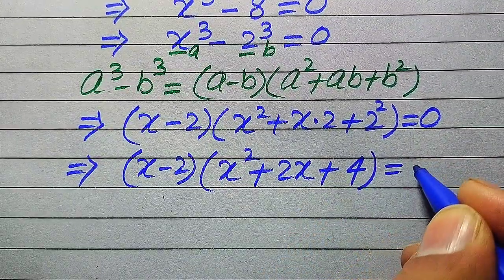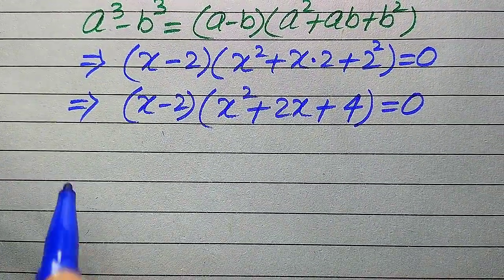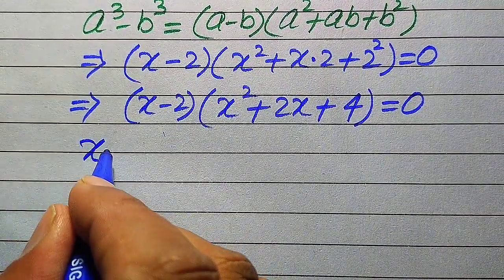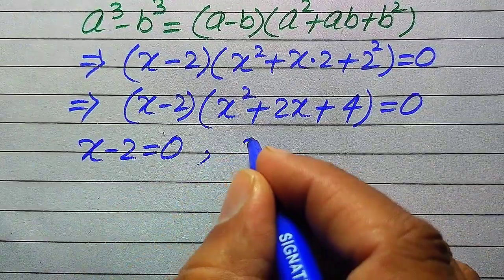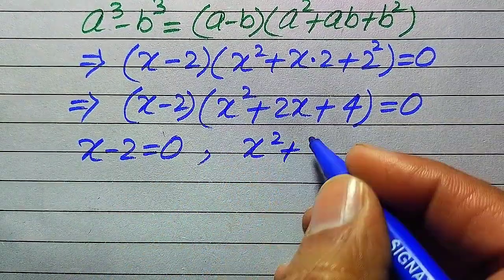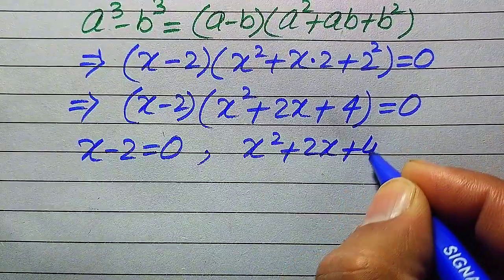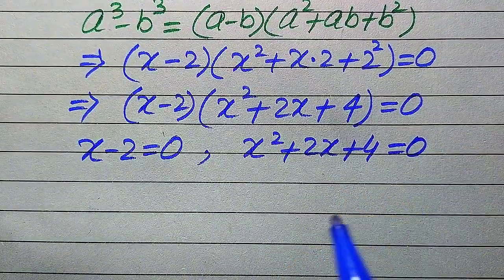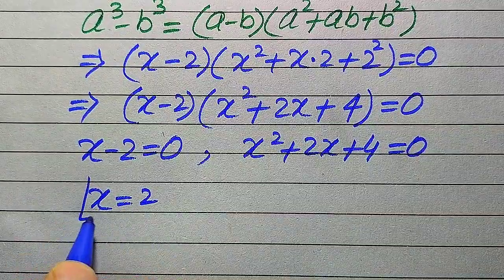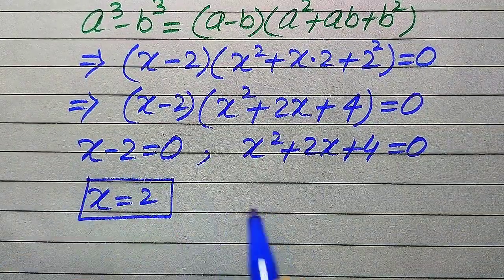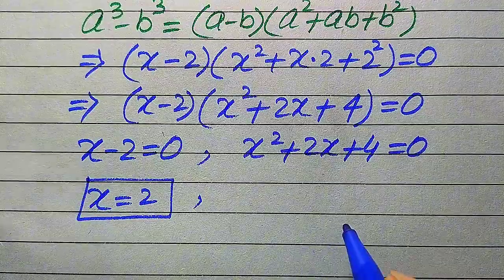Now we divide this equation into two cases. The first case is x minus 2 equals 0, and the second case is x squared plus 2x plus 4 equals 0. From the first case, we easily get x equals 2, which is the first real root of the given equation.